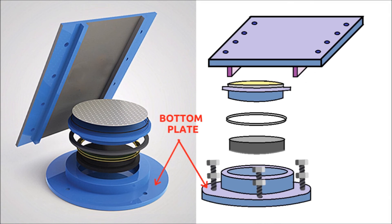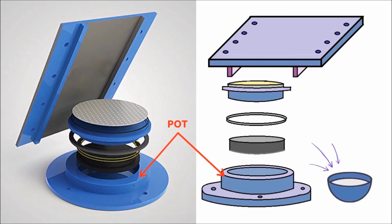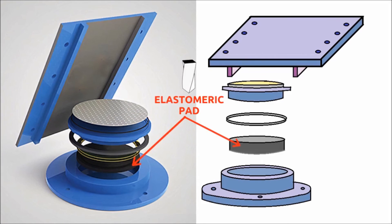This is the bottom plate anchored with the substructure. Here is the pot attached with the bottom plate, and this is a circular elastomeric bearing pad which is inserted into the pot.